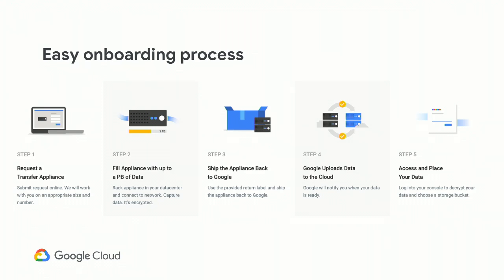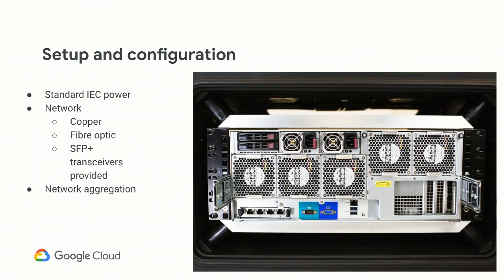For Canadian customers, the data upload will be based in the U.S. as we haven't set up a center in Canada yet, so you ship the appliance back to us in the U.S. Setup is pretty straightforward — the server has standard power connectors, standard copper ethernet connectors, and we support fiber optic with SFP+ transceivers provided. We also support network aggregation with four network ports, running as fast as 40 gigabits per second — so network is not a bottleneck. One common issue is with customers who have billions of small files; copying from existing file servers like Isilon or NetApp can be slow due to that file count.